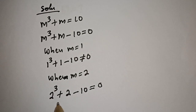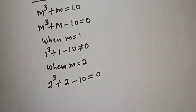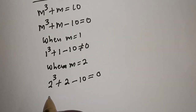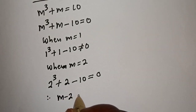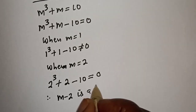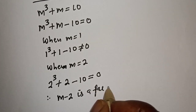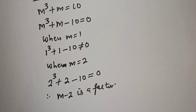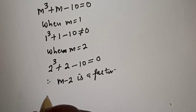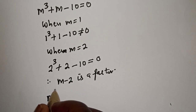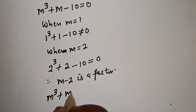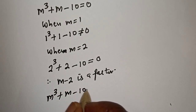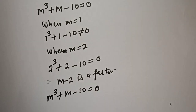That is, 2 raised to the power 3 is 8, plus 2, that is 10. Therefore m raised to the power 3 plus m minus 10 is equal to 0.